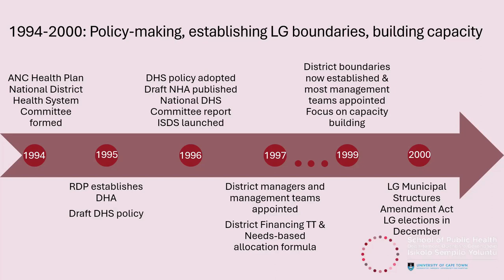In 1995, the RDP, based on the ANC Health Plan, decentralized healthcare and formally established the district health authority. In 1996, the district health systems policy was adopted and demarcation of districts was almost complete. In 1997, the district financing task team was established to address inter-provincial inequities, and we saw adoption of the needs-based allocation formula. By 1999, district boundaries were well established and most districts had appointed their management teams, with a real focus on capacity building. The National District Financing Committee developed guidelines for district expenditure reviews, and the NDOH published the District Manager's Handbook and a Guide to District Health Planning, and introduced the DHS competition to generate best practices.